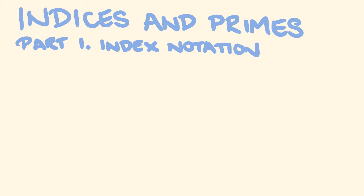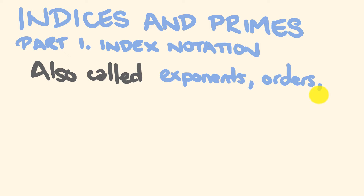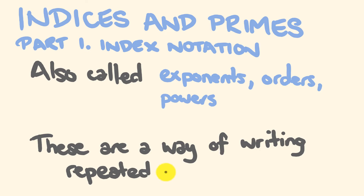So first off, indices. Indices are also called exponents, orders, or powers, and pretty much what they are is repeated multiplication — they're a way of writing repeated multiplication.